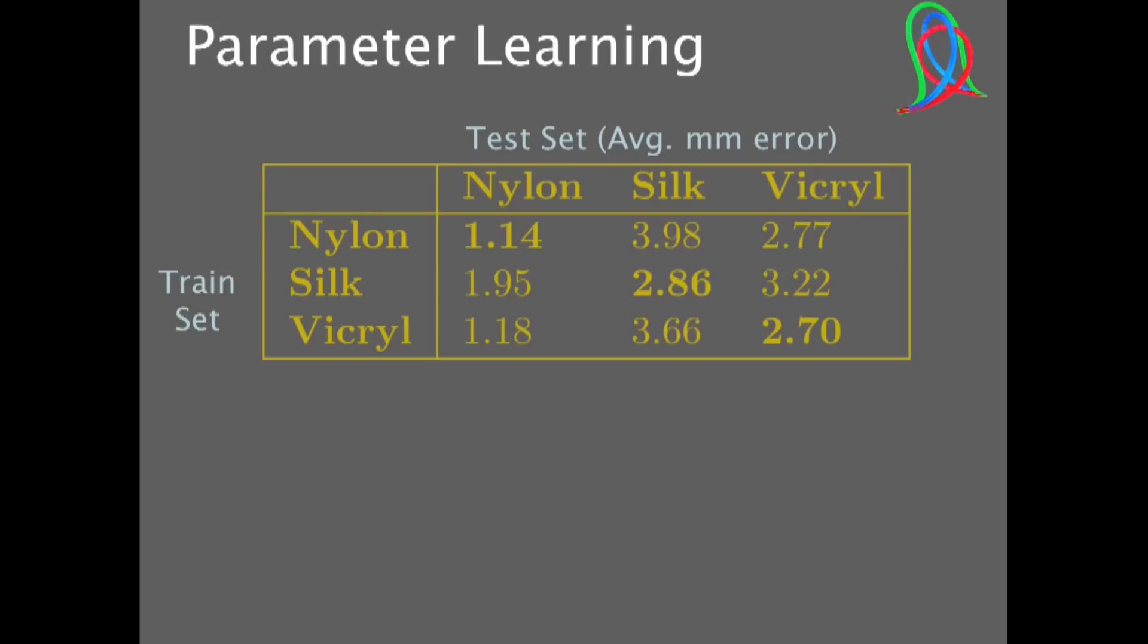So with three types of material, we ran this parameter learning. And here what you can see is the test set for the three types of materials. And indeed, we found that the best scores corresponded to the same training and test set, suggesting that it is indeed useful to learn the parameters for specific materials.